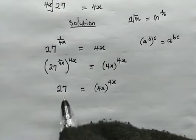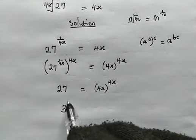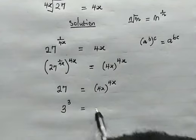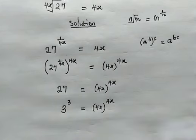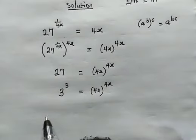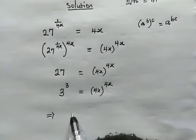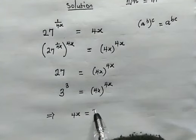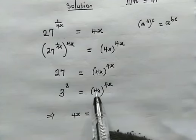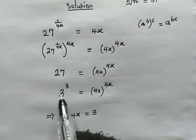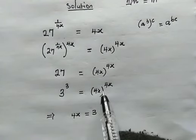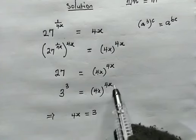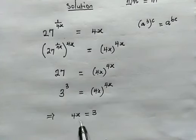Now let us recall, 27 is the same as 3 to the power of 3. Then this is equal to 4x raised power of 4x. Now from here, this implies that 4x is equal to 3. From the base, we have 4x. And from the base, the left hand side, we have 3. And the power here, corresponding to what we have as the basis, 4x, which is equal to 3.